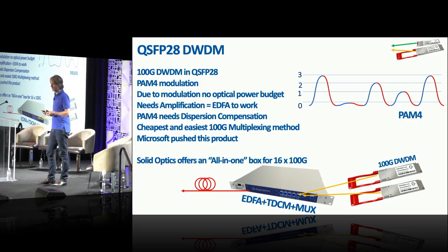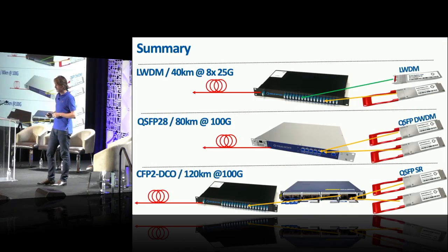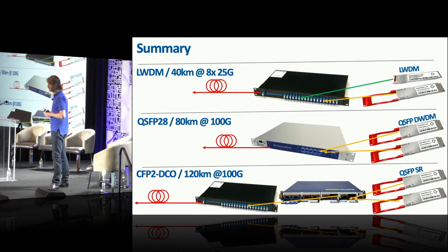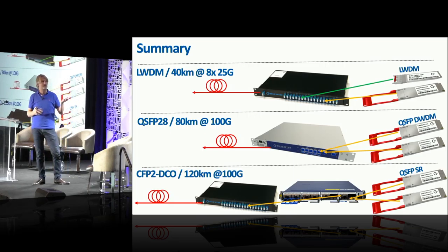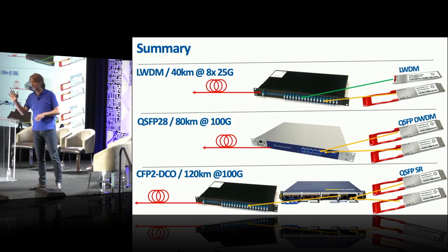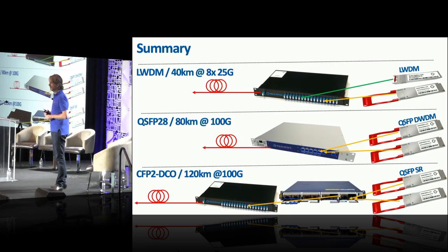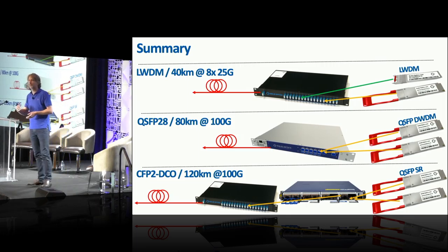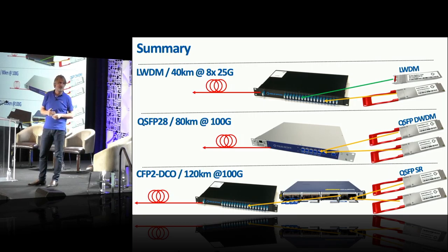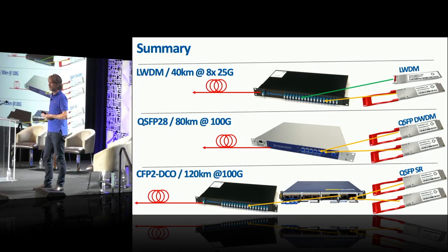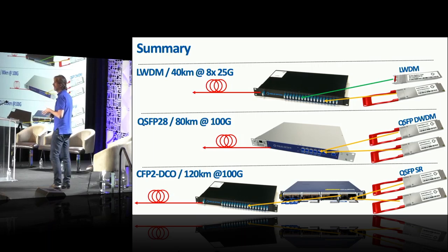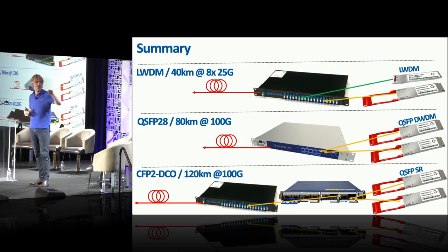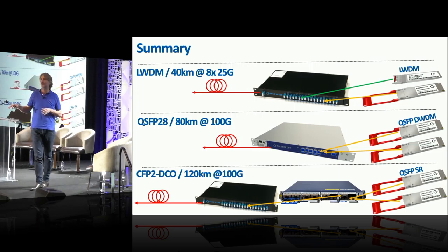We built an all-in-one box — an EDFA mux — with everything inside. Summary of solutions: LWDM supports up to 40 kilometers, 8 times 25G, with future 100G. LWDM optics cost roughly $400–$500, passive mux around $500 — a very cheap multiplexing option. The QSFP28 PAM4 solution has optics around $3,500 and the white box around $6,500–$7,000, so you start at about $10,000 per site.